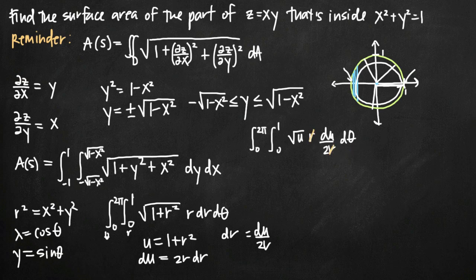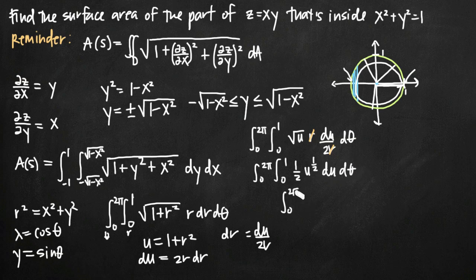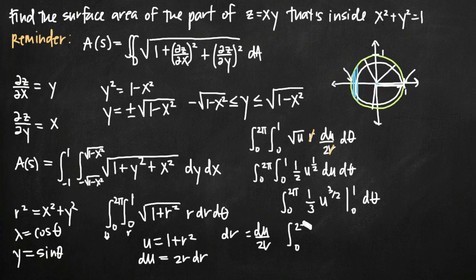The r variables cancel, leaving us with the integral from 0 to 2 pi of the integral from 0 to 1, with the factor of 1 half brought out in front, of u to the 1 half power du d theta. Integrating with respect to u, we add 1 to the exponent to get u to the 3 halves, and divide the coefficient: 1 half divided by 3 halves equals 1 third. We evaluate 1 third times 1 plus r squared to the 3 halves on the interval 0 to 1, then d theta.